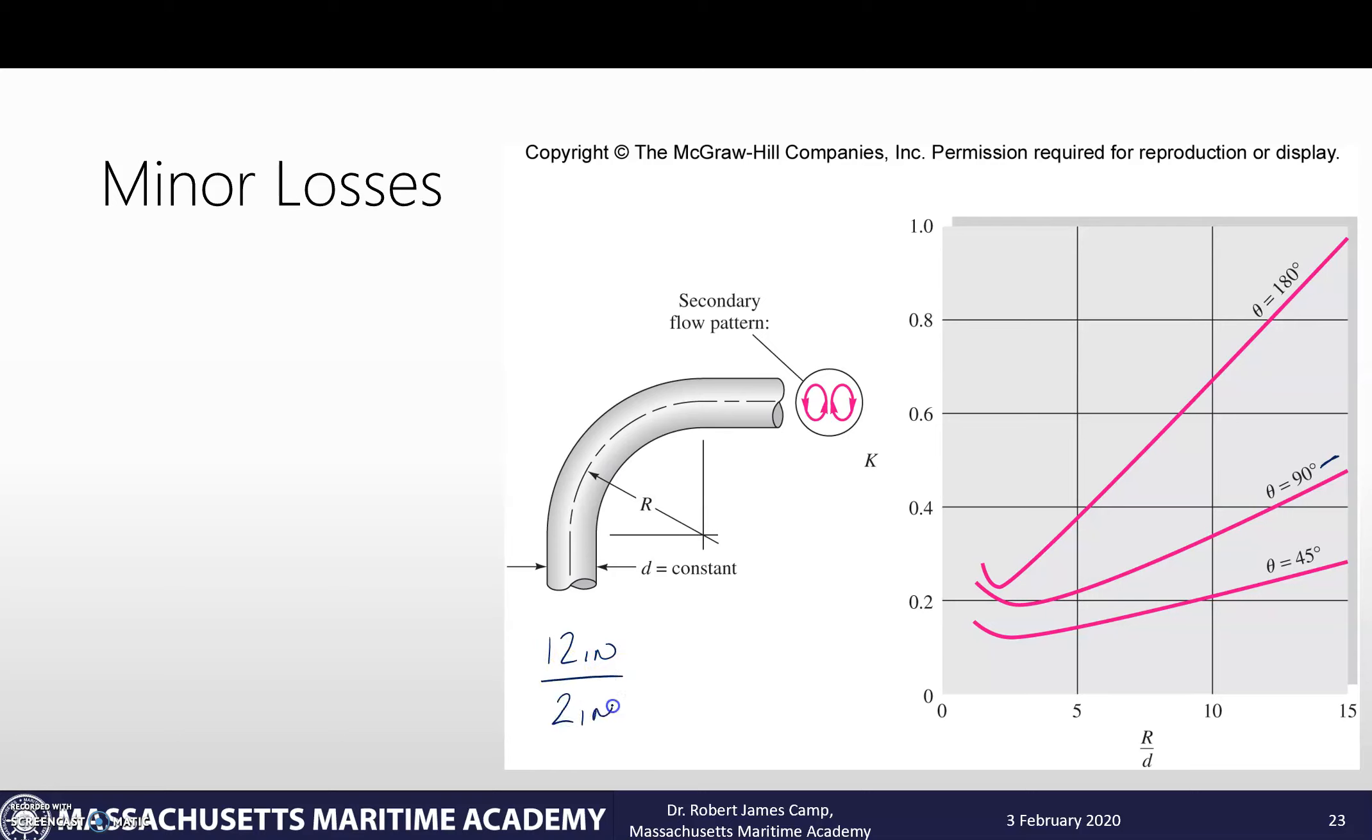And d is our diameter which is 2 inches. That gives us a factor of 6. So if we take a look at 6, that puts us about right there. Now we read over here, and that's about a quarter of the way up. So we'll say that our loss factor for our 12 inch bend radius is going to be about 0.25.